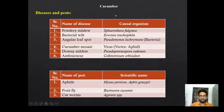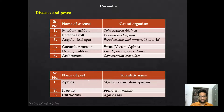Now diseases and pests of cucumber. Diseases include powdery mildew, bacterial wilt, angular leaf spot, cucumber mosaic, downy mildew, and anthracnose. Remember their scientific names. Pests include aphids, fruit fly, and cutworm.